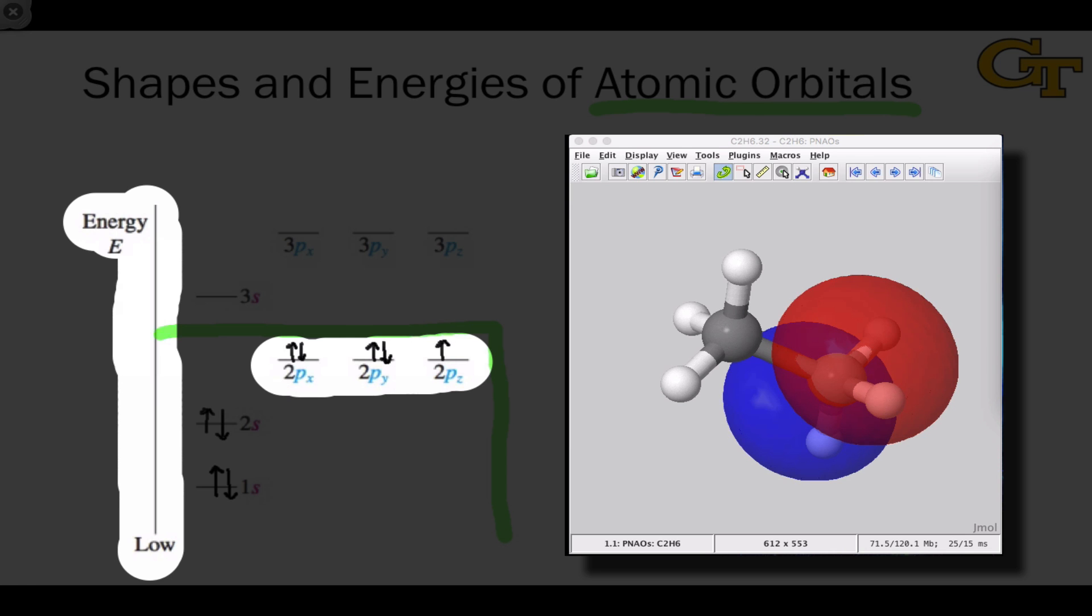Put another way, carbon has two other p orbitals at right angles to this one, here and here, and notice that one of them points along the axis between the nuclei, and the other two are perpendicular to this orbital.